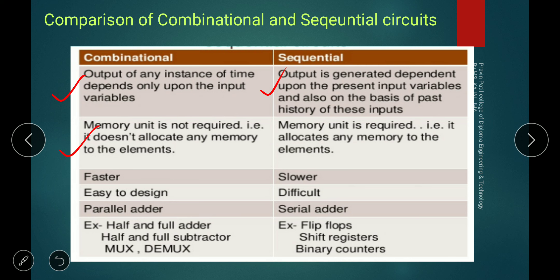For combinational circuits, memory unit is not required because it gives the output only at the instant of the input. But for sequential circuits, memory unit is required because we consider past and present input. Combinational circuits are faster; sequential circuits are slower. Combinational circuits are easy to design; sequential circuits are difficult to design. Combinational is a parallel adder; sequential is a serial adder. Examples of combinational circuits: half adder, subtractor, multiplexer, and demultiplexer. Sequential circuits include all flip-flops, shift registers, and binary counters.